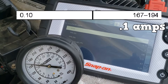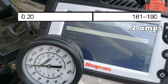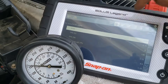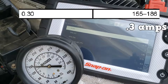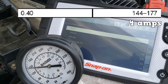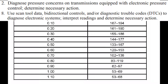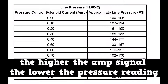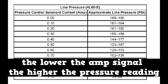To test the EPC solenoid, the setup should be the same as checking line pressure. You'll use a bidirectional scan tool to change the amperage signal to the EPC solenoid. At each signal, compare the pressure gauge readings to the specification chart. The higher the amperage signal, the lower the pressure reading; the lower the amperage signal, the higher the pressure reading.